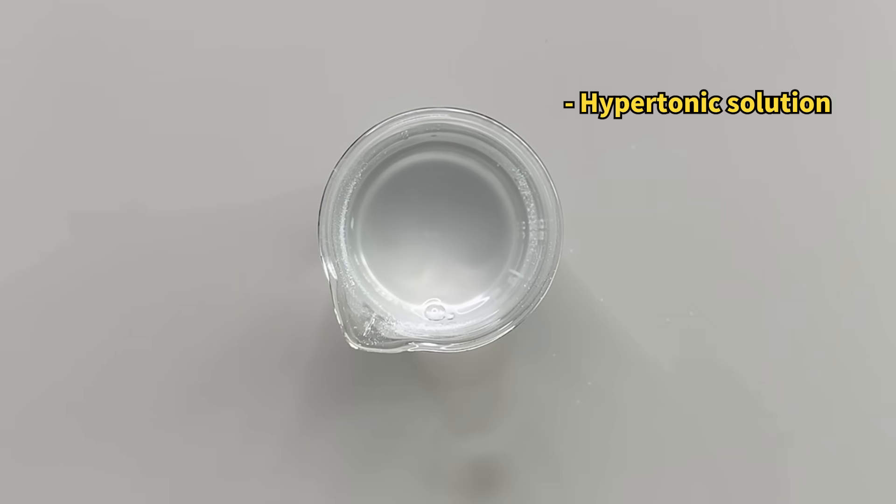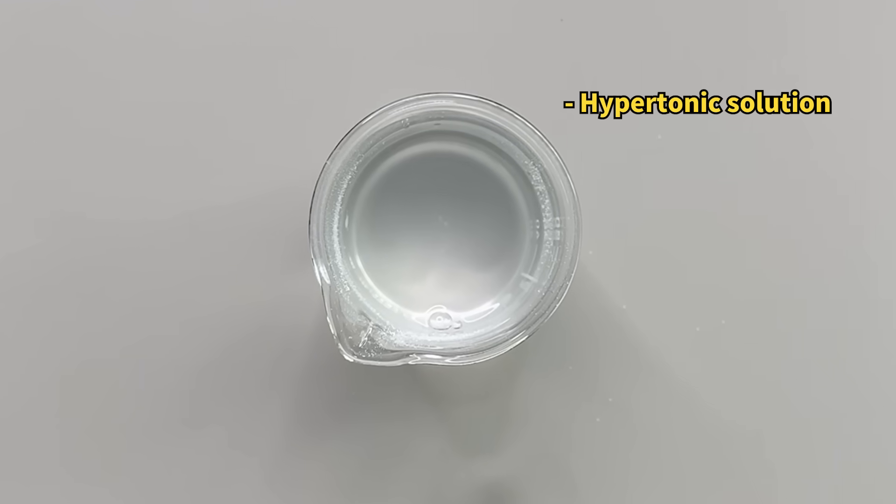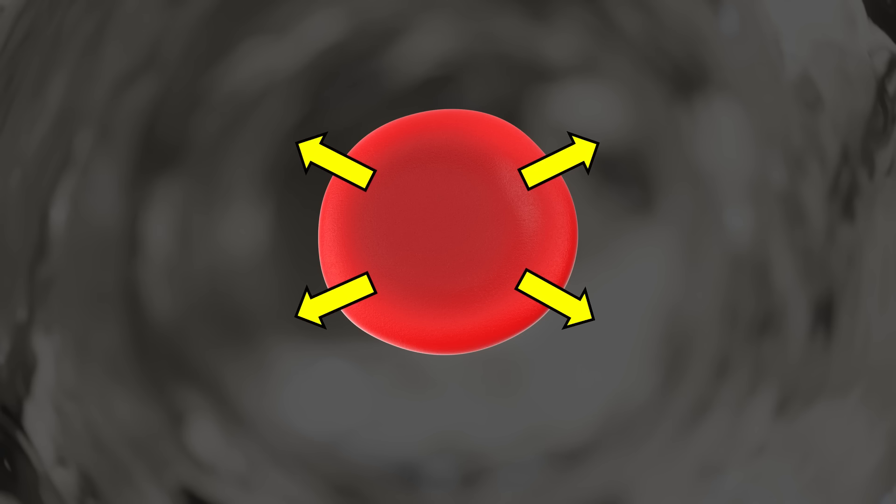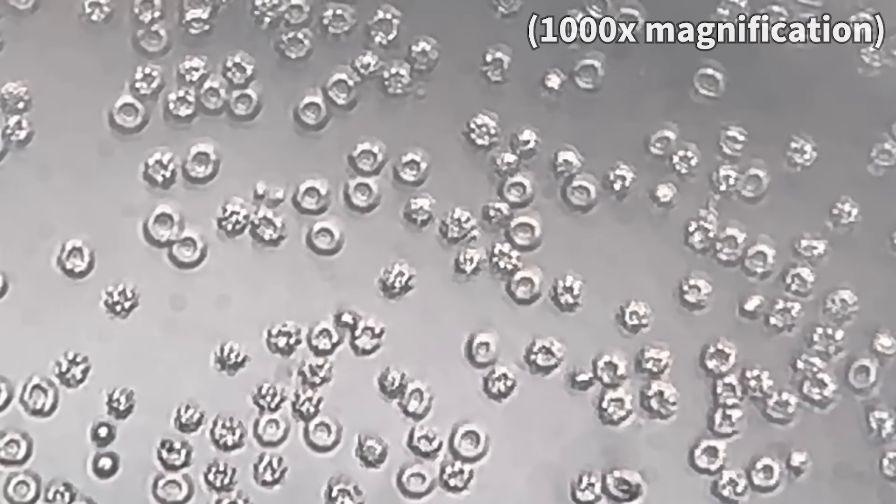Salt water, having a higher concentration than bodily fluids, causes the red blood cells to lose water through osmosis, much like how vegetables shrivel when salted.